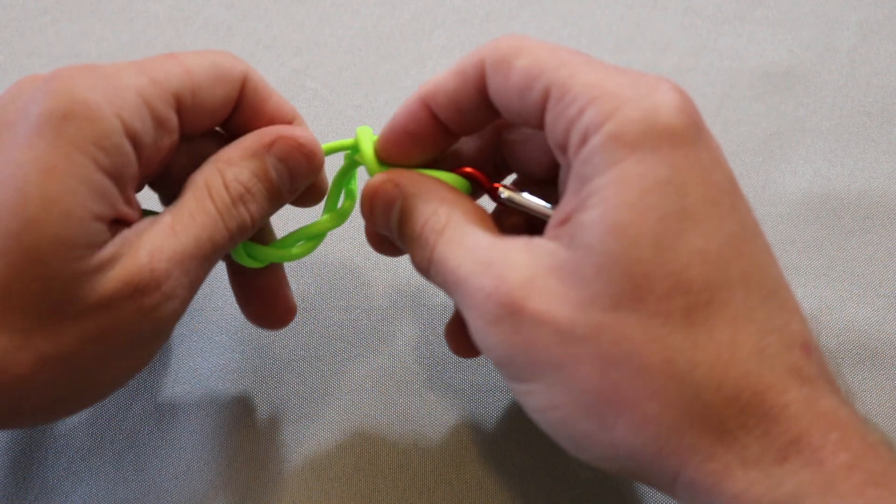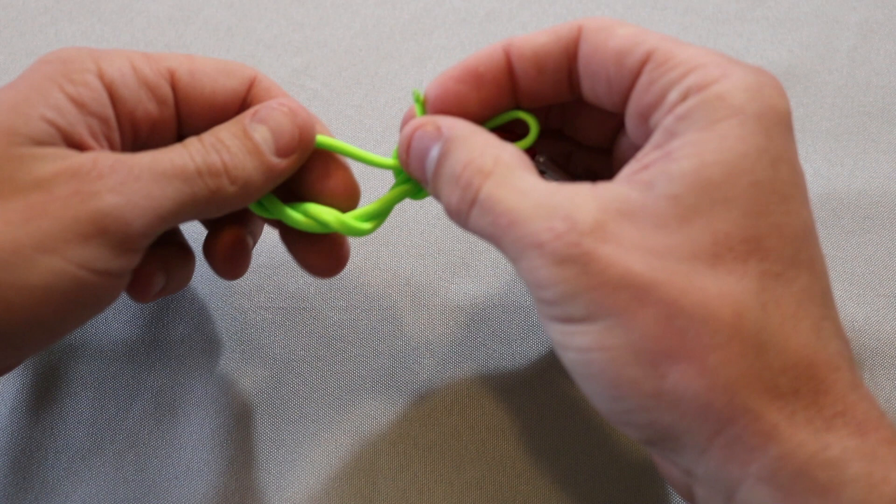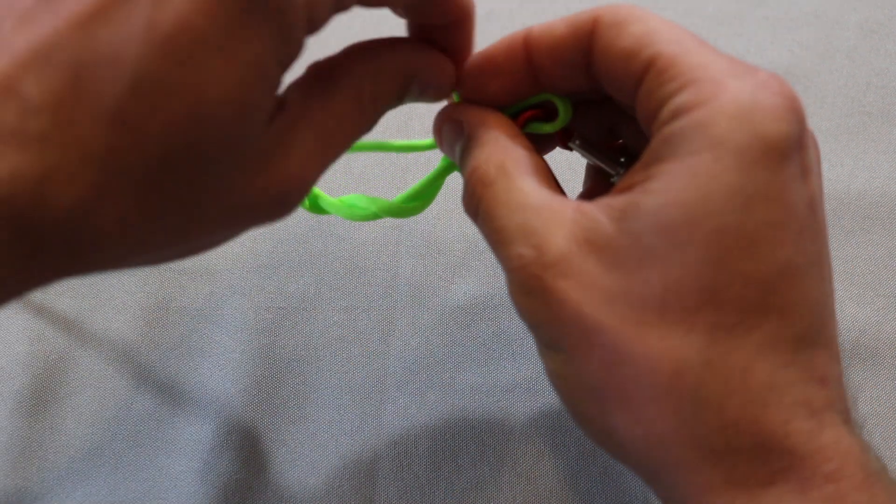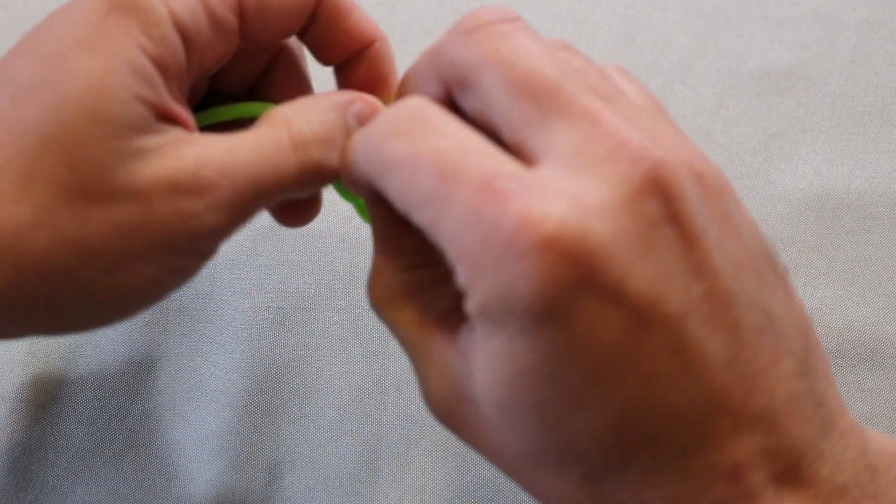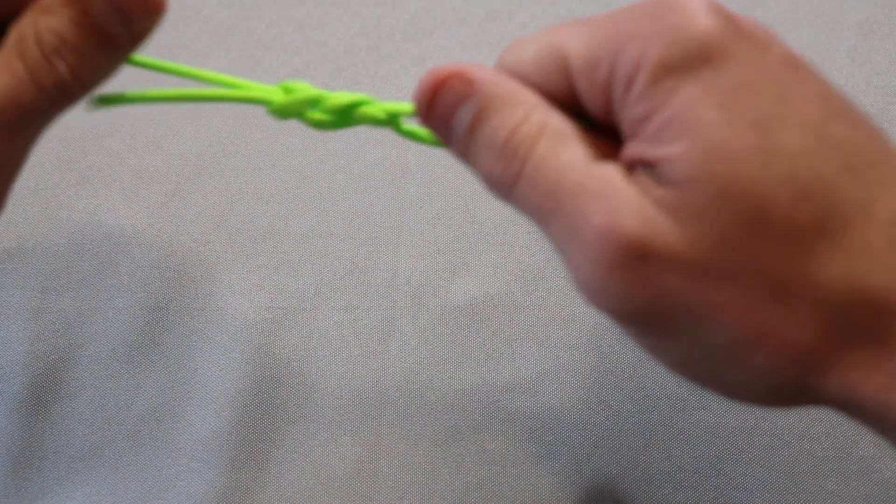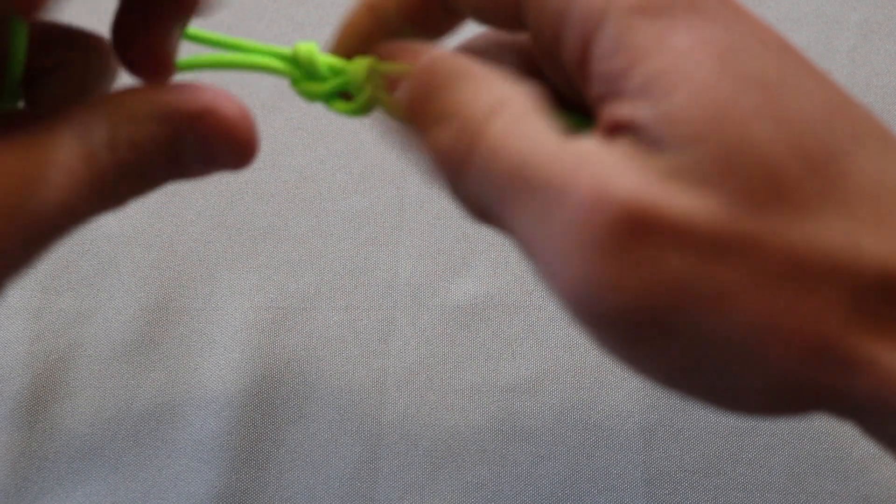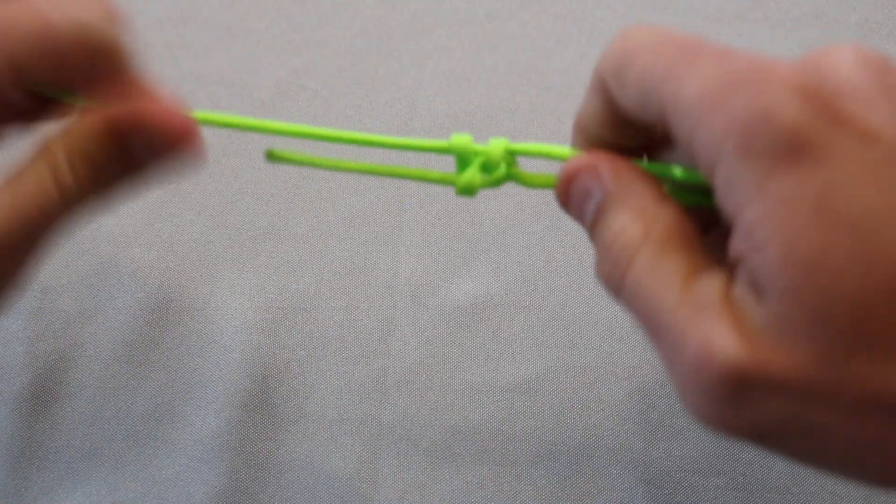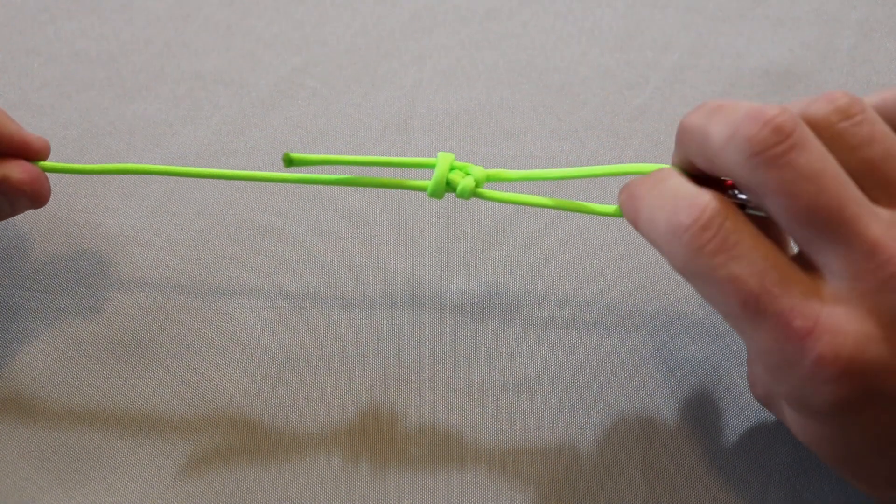So you have the gap there, you go back through it, and then that just created another loop. You're going to take the tag end, come in, do that again. Lubricate this knot at this time. Put your finger through the knot and cinch it all down, and you have yourself the Rapala knot.